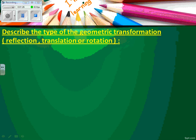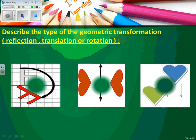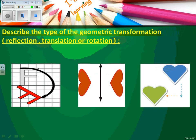Now, describe the type of the geometric transformation: reflection, translation, or rotation. Let's start from the left. In this figure, the geometric transformation in this shape is — excellent — rotation. It turns.